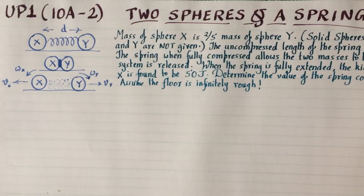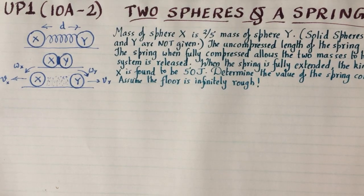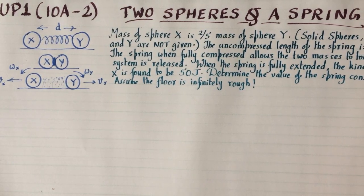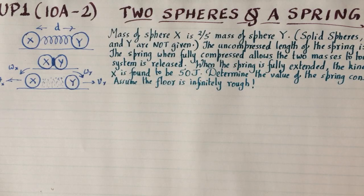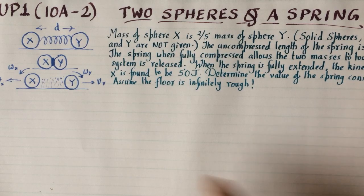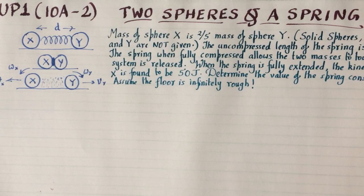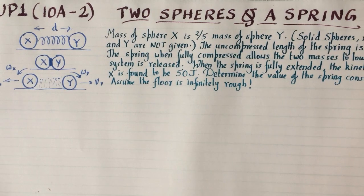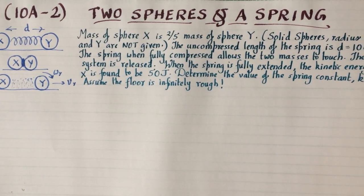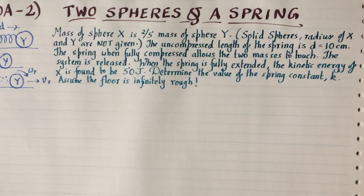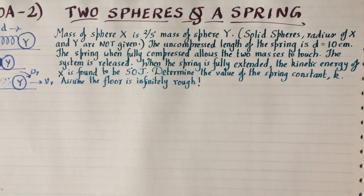Two spheres, X and Y, are connected by a spring. Initially, the two spheres are at rest and the spring is completely compressed, as shown here, and then released. When released, the spheres translate and rotate at the same time. The assumption here is that the floor is infinitely rough, ensuring that the spheres roll without slipping.